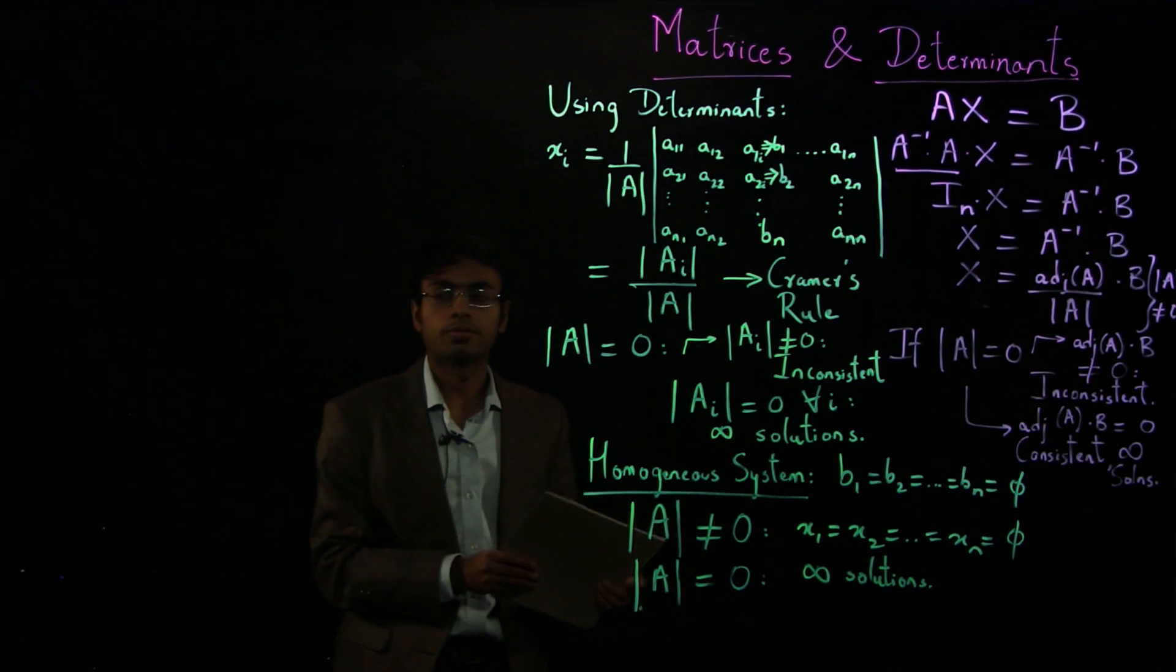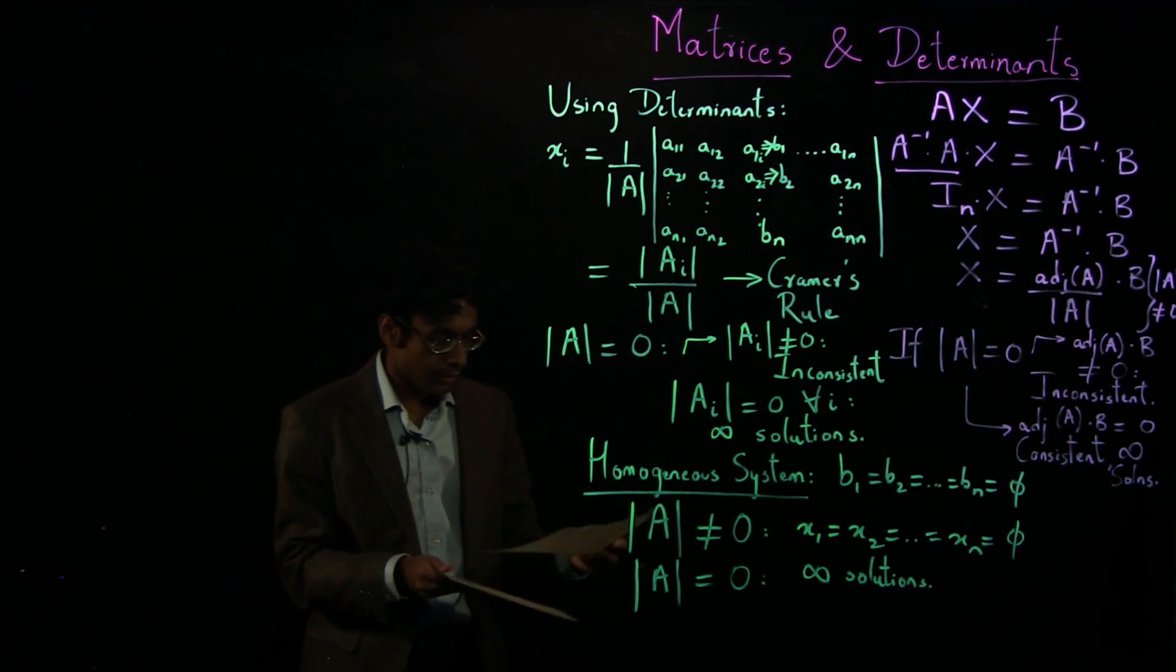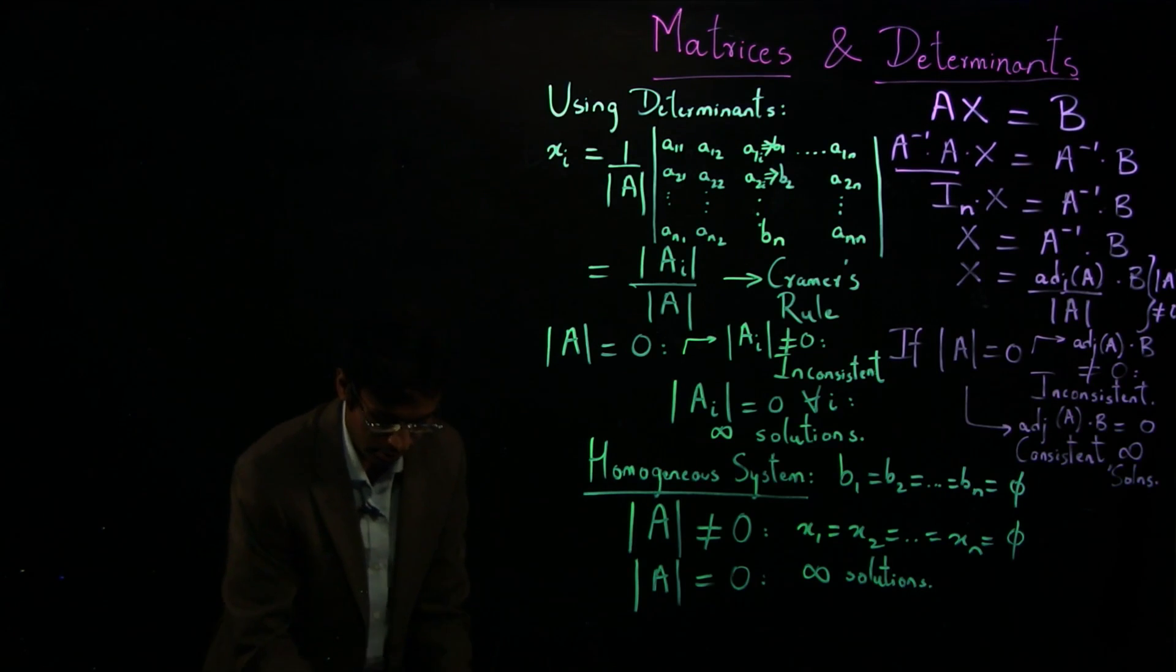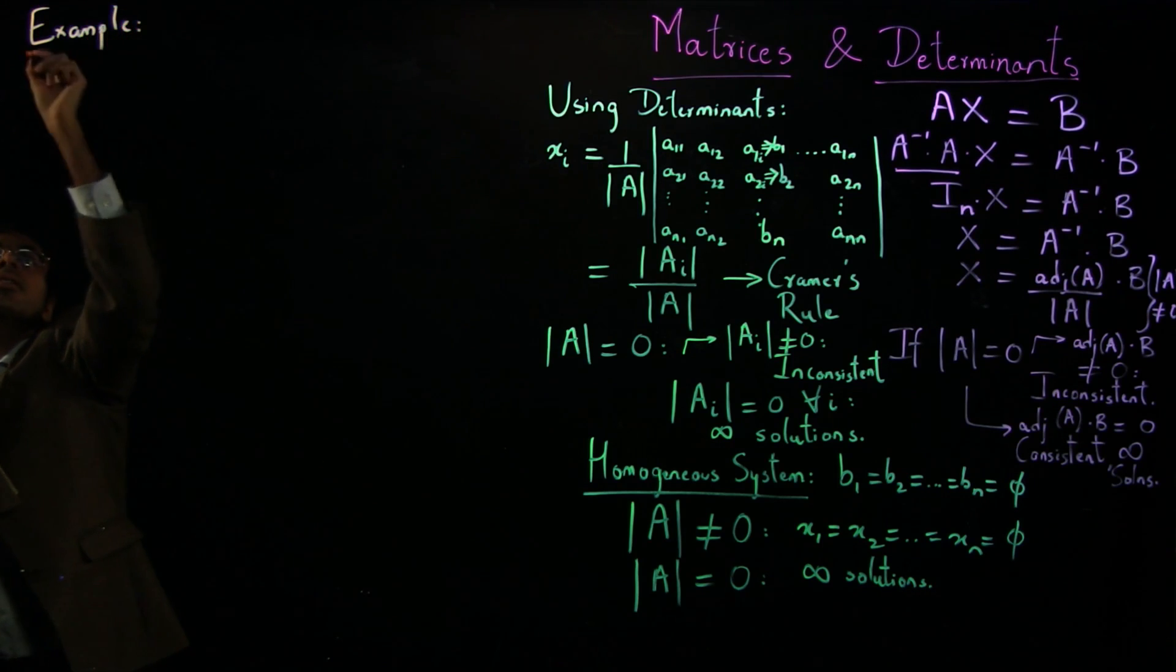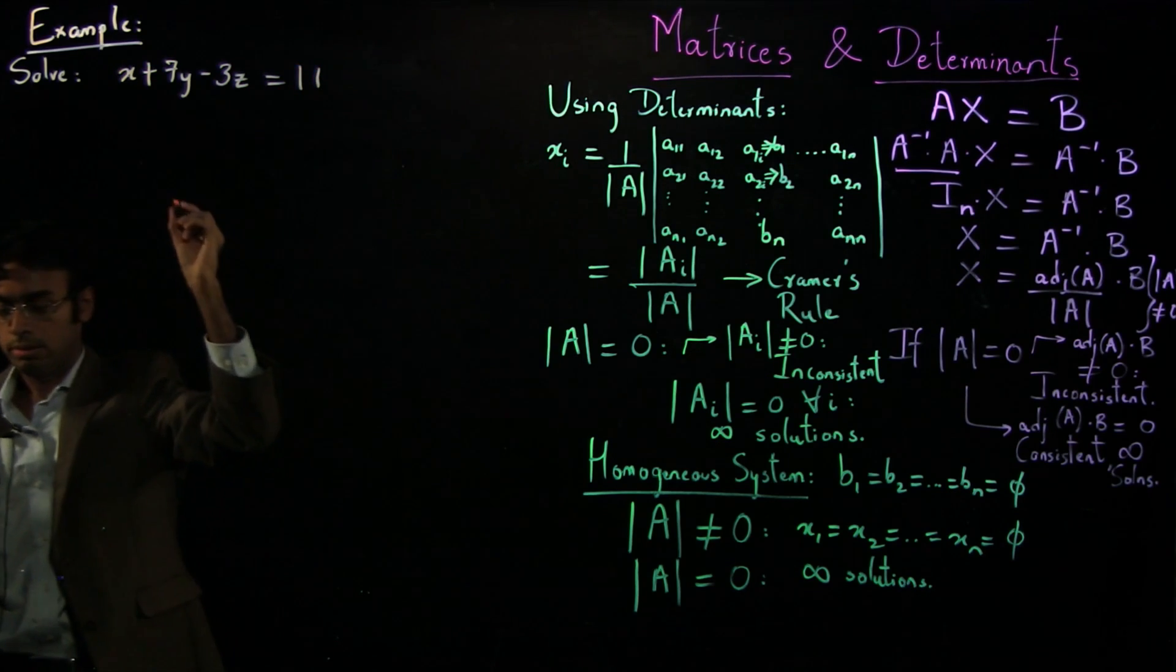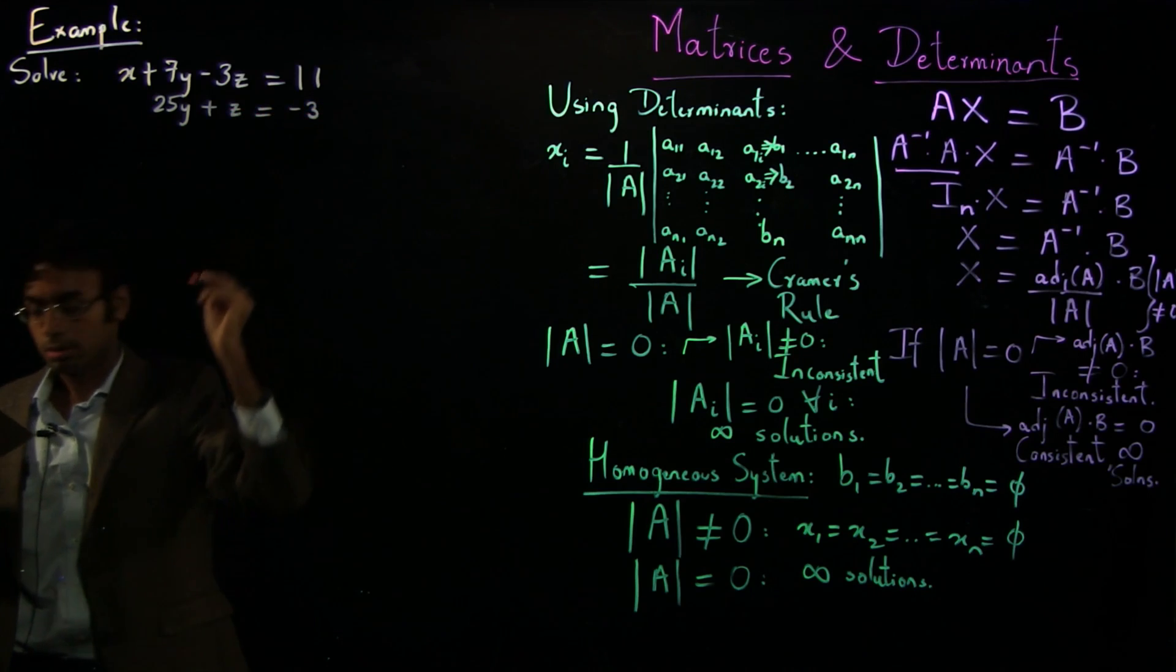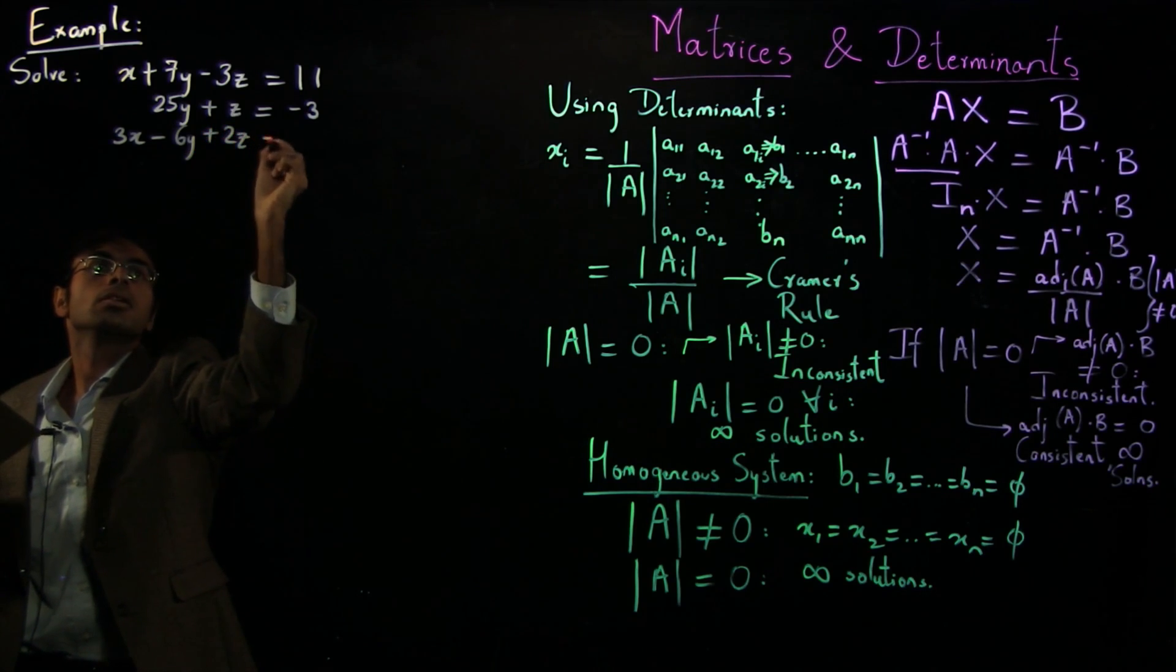So these are the two general methods to find out the values of the unknown variables, x1, x2, all the way to xn. And so let's take a solved example to better understand how to work these methods. So let's solve this system of equations. We have x plus 7y minus 3z equals 11, 25y plus z equals minus 3, and 3x minus 6y plus 2z equals 0.